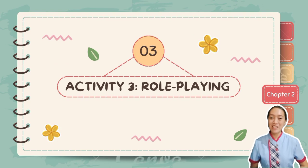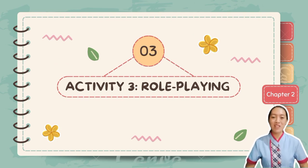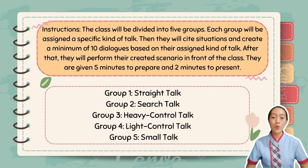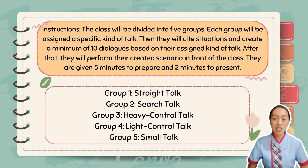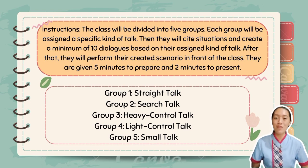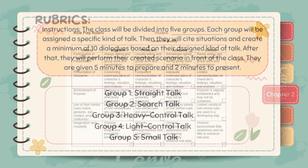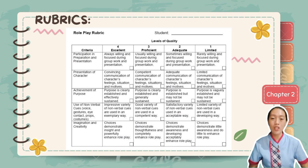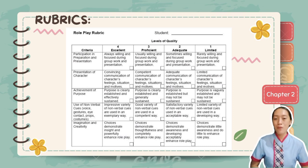Now let's have an activity for you to apply what you have learned. This activity is called role-playing. The class will be divided into five groups, each assigned a specific kind of talk. Each group will cite scenarios and create a minimum of 15 dialogues based on their assigned kind of talk, then perform their scenario in front of the class. They are given five minutes to prepare and two minutes to present. Here is the rubric to guide you in creating your script and performing your scenarios.